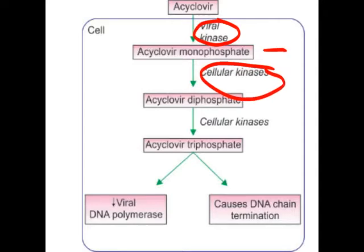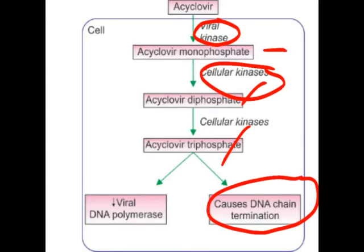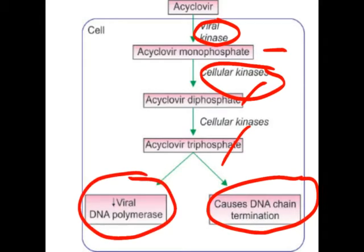In the second step, the cellular kinase or host cell kinase converts acyclovir monophosphate into diphosphate and then triphosphate. When acyclovir triphosphate is synthesized, it enters DNA synthesis, and due to the absence of the sugar moiety, it causes termination of the DNA chain. It is also responsible for decreasing viral DNA polymerase activity. This is how acyclovir performs its antiviral function.